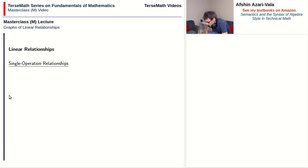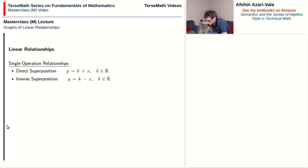Linear relationships can come from single-operation relationships: direct superposition with the equation y equals k plus x, inverse superposition with the equation y equals k minus x, or direct proportion with the equation y equals kx — with k being a constant in each case. Once we get to inverse proportion, the graph becomes nonlinear, so inverse proportion problems are perhaps the simplest kinds of nonlinear problems you may come across.